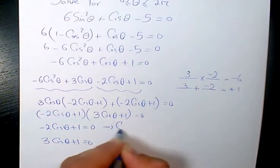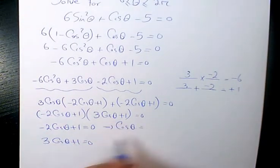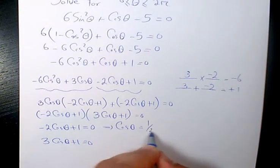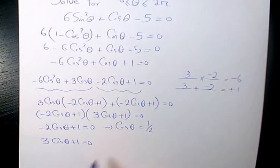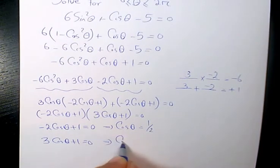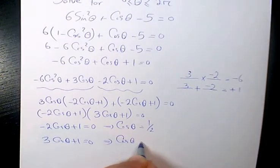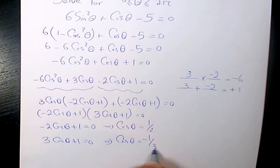Solving each factor: from negative 2 cosine theta plus 1 equals 0 we get cosine theta equals 1 over 2, and from 3 cosine theta plus 1 equals 0 we get cosine theta equals negative 1 over 3.